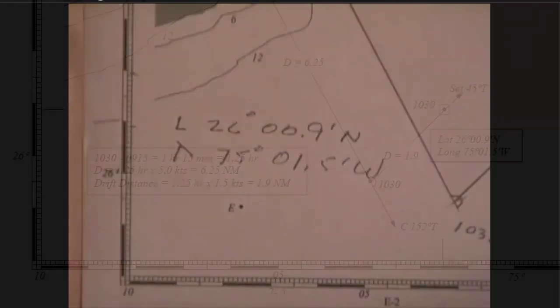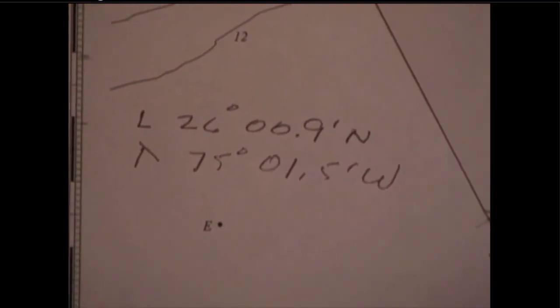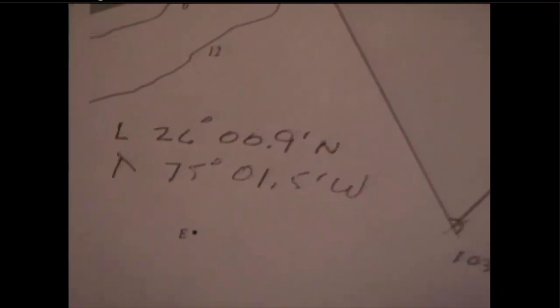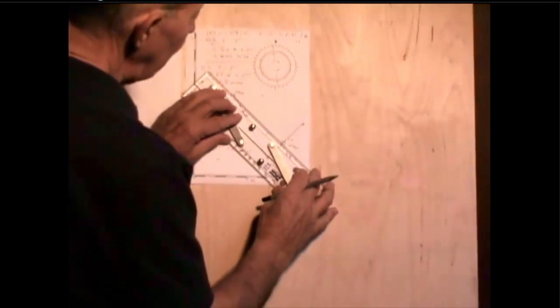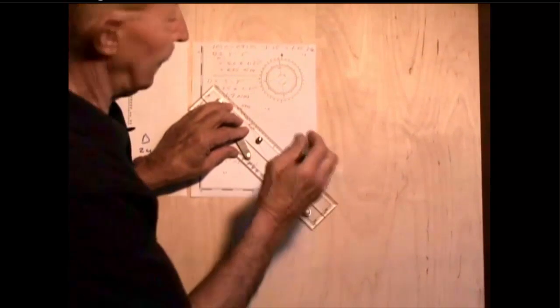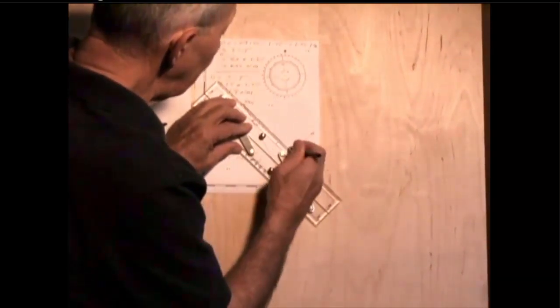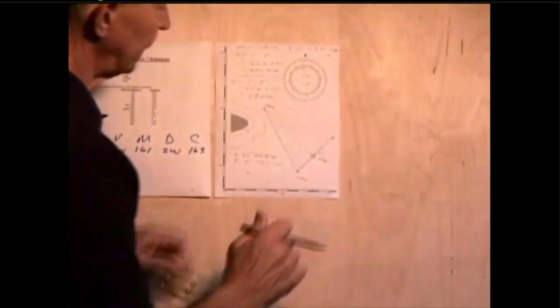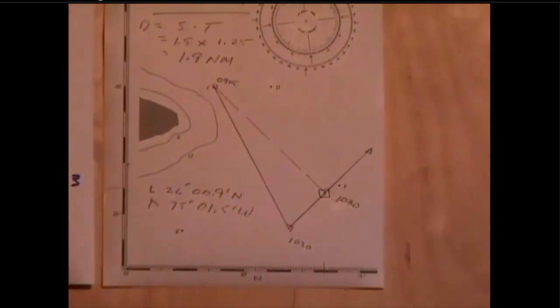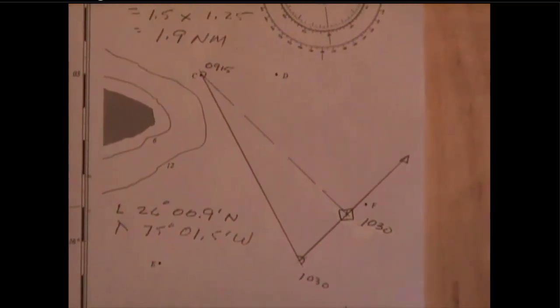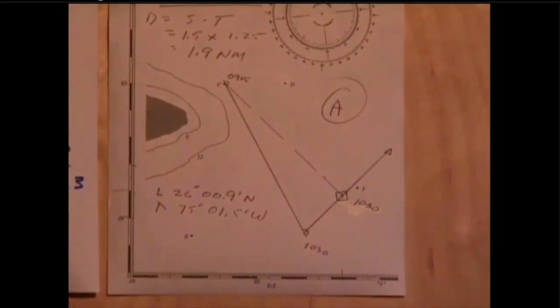Now, one other thing to note here, although this was not asked in the question, our course over ground in this case was actually from point C to the estimated position. In other words, we actually traveled over ground in this direction, even though we were sailing on the DR in that direction. So that's a Type A current problem.